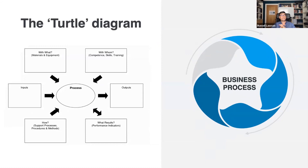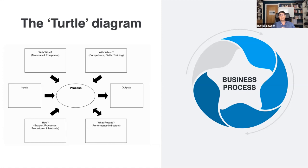A best practice tool used in ISO is the turtle diagram — a visual tool that can be used to detail, in quite a precise manner, all the elements of any given process within an organization. In the center is the actual scope of the process — what it does and what it's trying to achieve. The 'with whom' section lists all job roles with responsibility to complete the process, demonstrating how the organization assigns roles and responsibilities, since different individuals may be parts of many different processes. The 'with what' section lists all the resources needed to successfully perform the process.